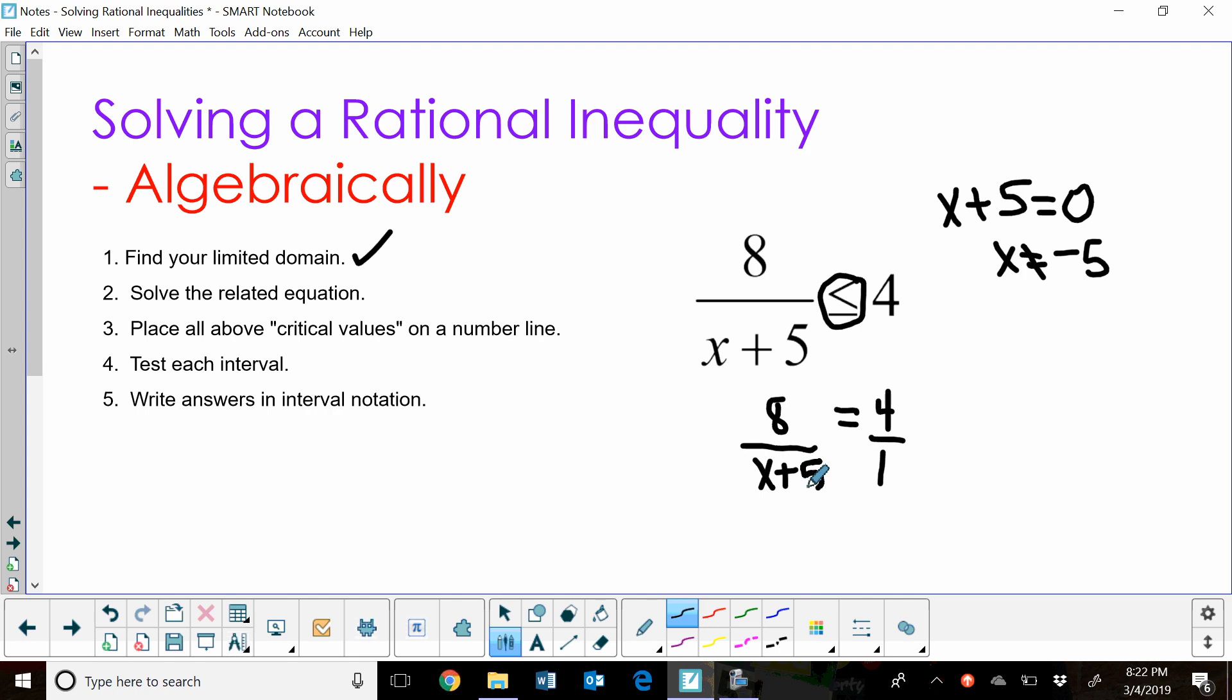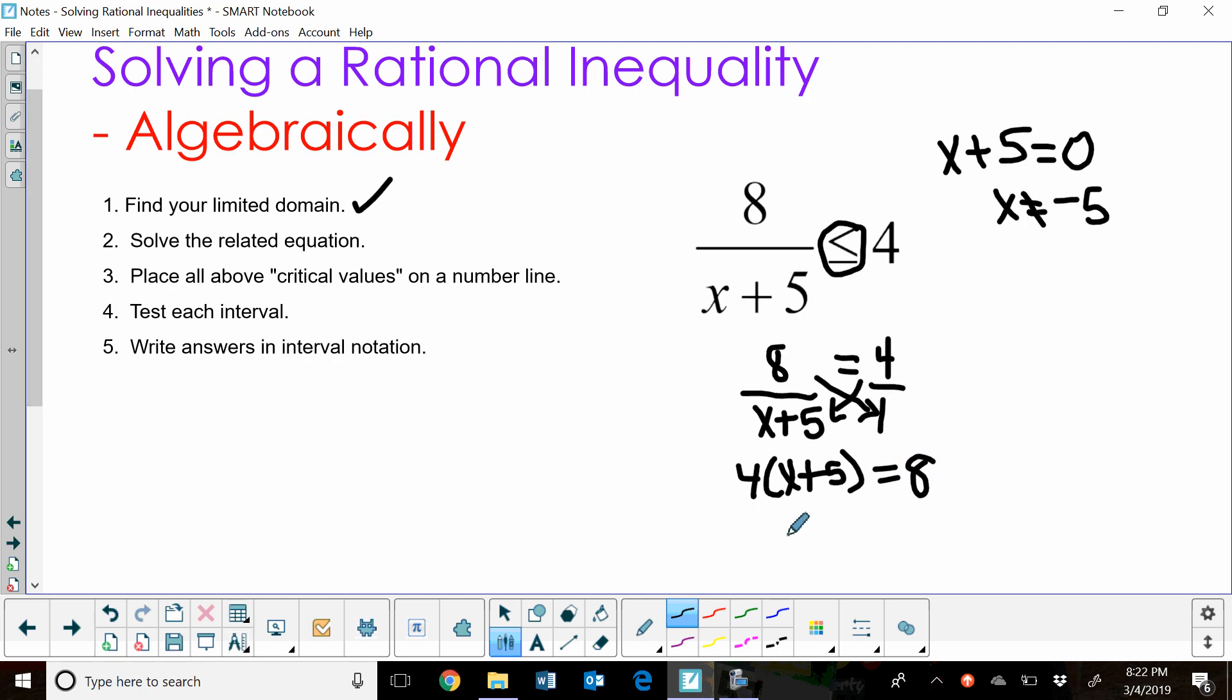So once it's set up as a proportion, we can just cross multiply and solve. I'm going to take 4 times x plus 5 and set it equal to 8 times 1, which is just 8. So I get 4x plus 20 is equal to 8. So 4x is equal to negative 12 and x would then be equal to 3.